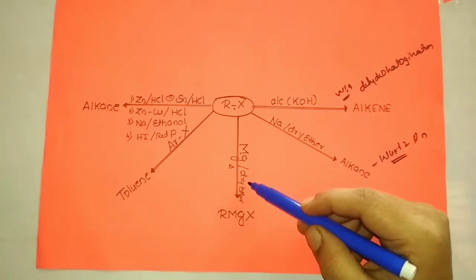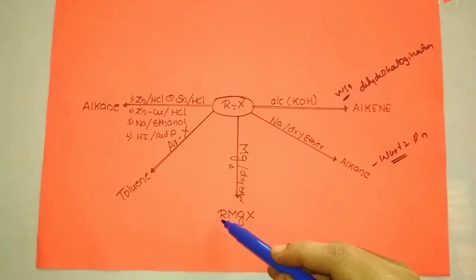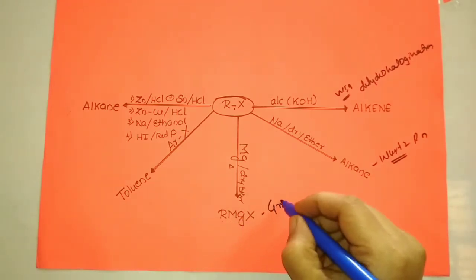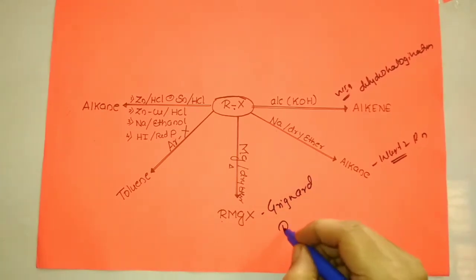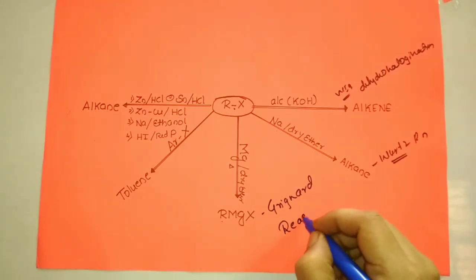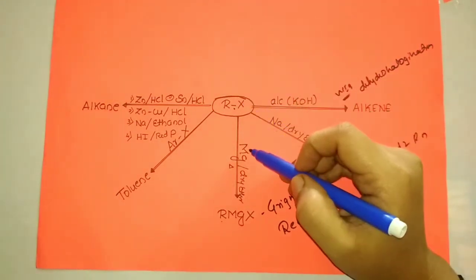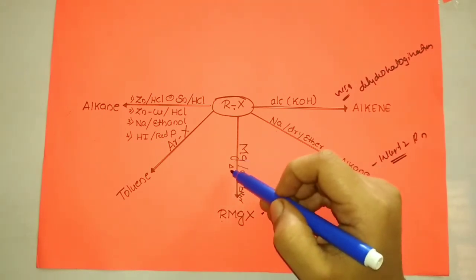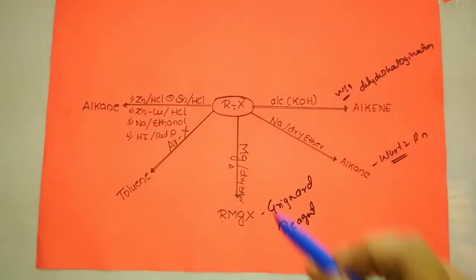When alkyl halide is treated with magnesium in the presence of dry ether, it results in the formation of alkyl magnesium halide, which is well known as the Grignard reagent. Alkyl halide with magnesium in dry ether gives the Grignard reagent.